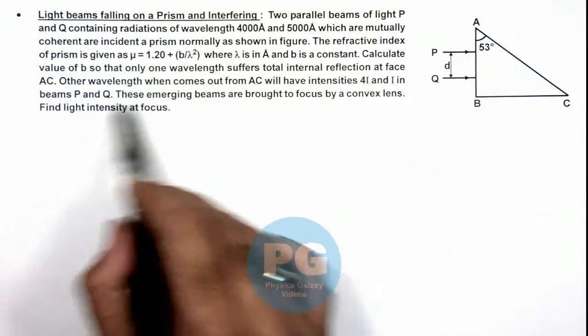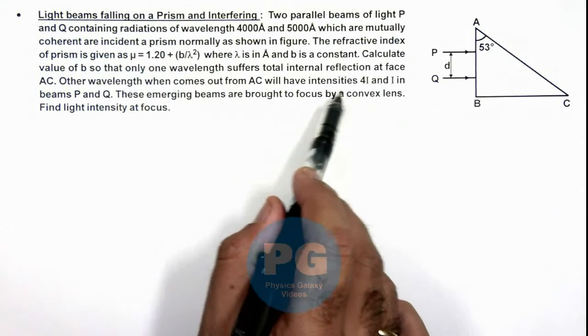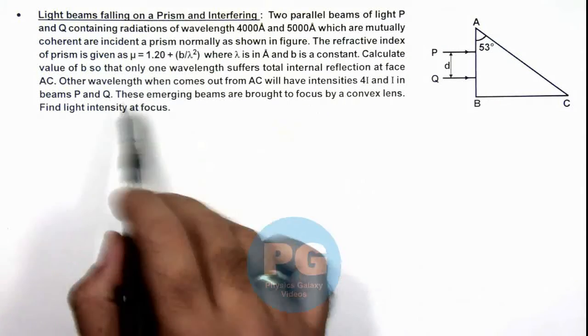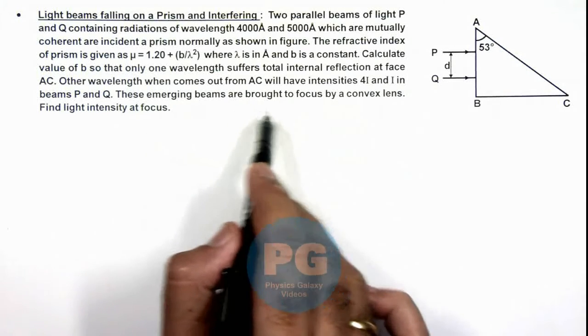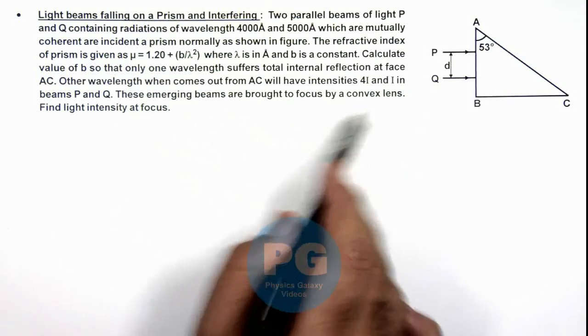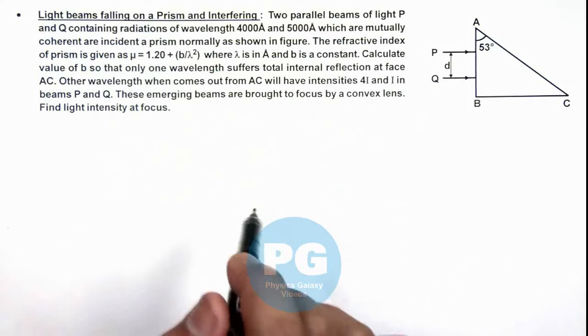And other wavelength when comes out from AC will have intensities 4i and i in beams P and Q. And these emerging beams are brought to focus by a convex lens and we are required to find the light intensity at focus also.